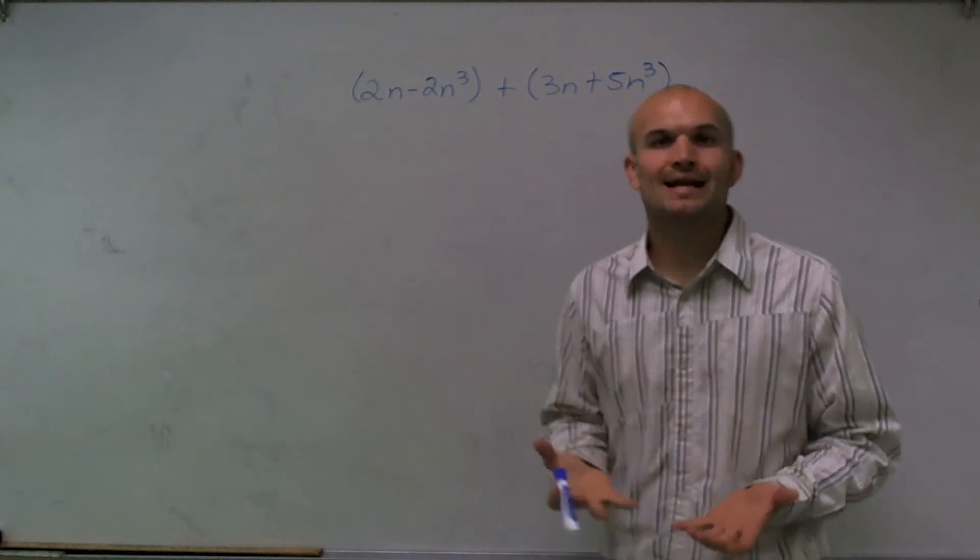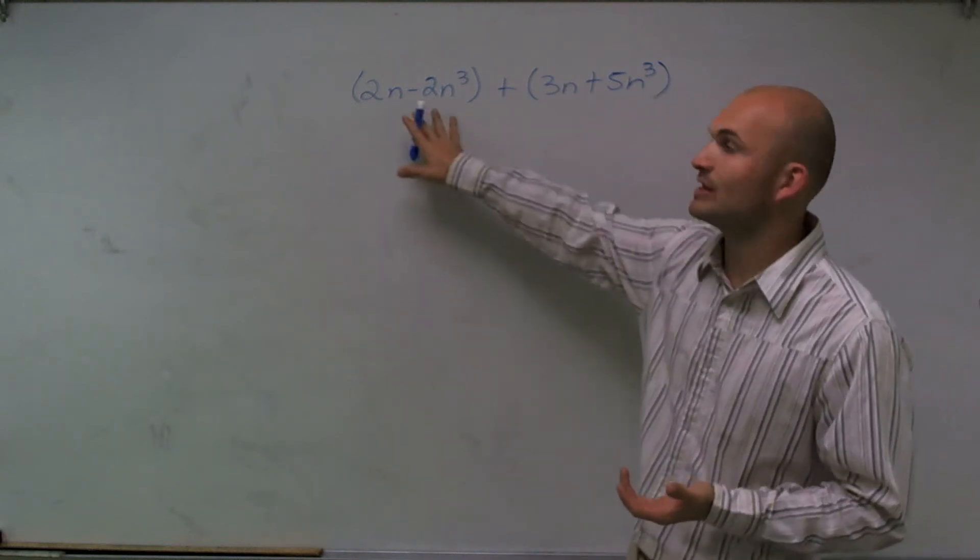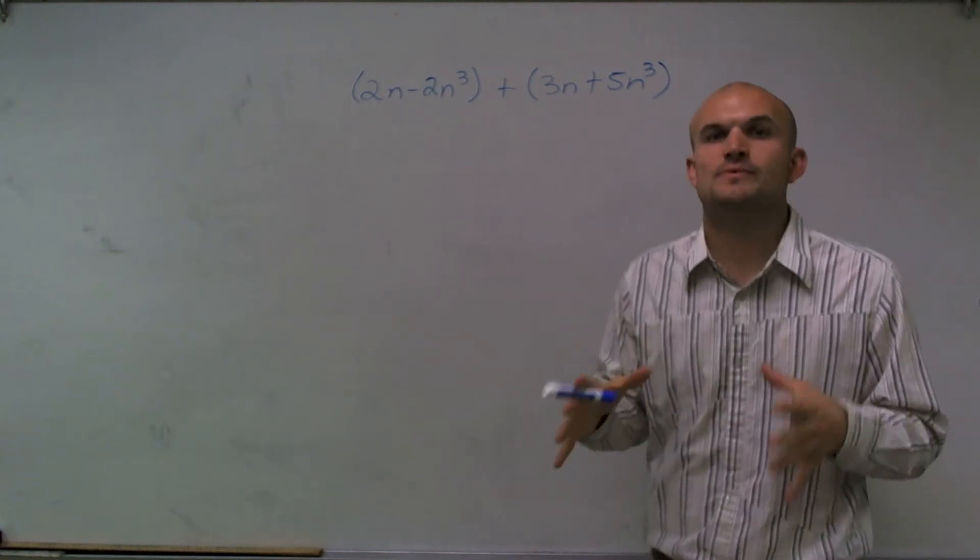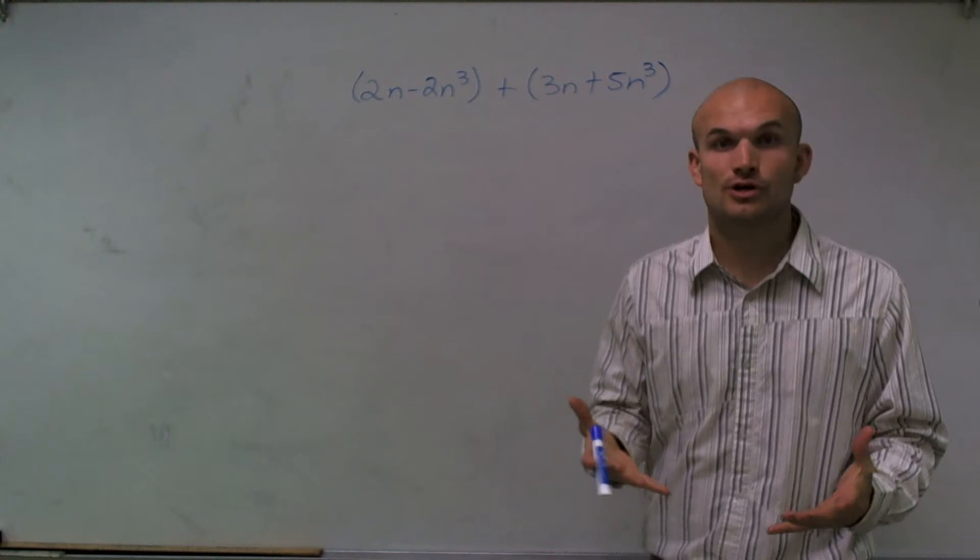Now, the main important thing when adding polynomials—in this case we have a binomial because we have two terms for each polynomial—is we can only combine like terms.